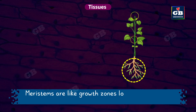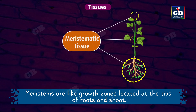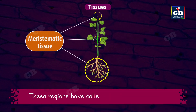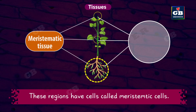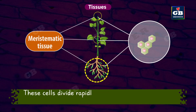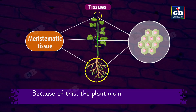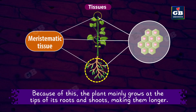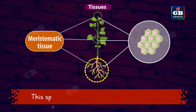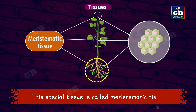Meristems are like growth zones located at the tips of roots and shoots. These regions have cells called meristematic cells, which divide rapidly and are responsible for the plant's growth. Because of this, the plant mainly grows at the tips of its roots and shoots, making them longer. This special tissue is called meristematic tissue.